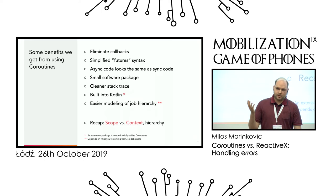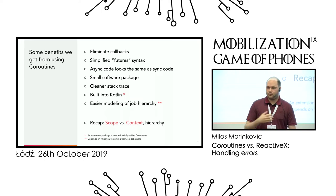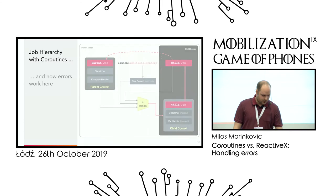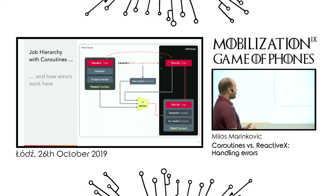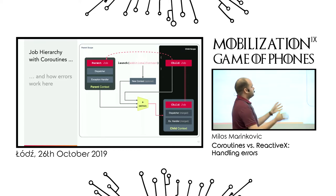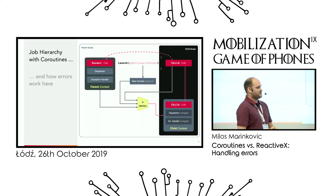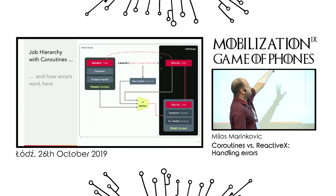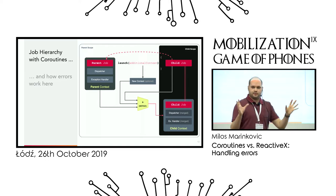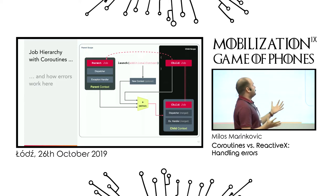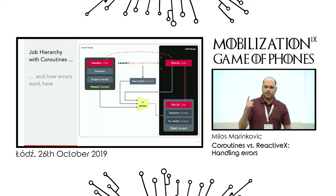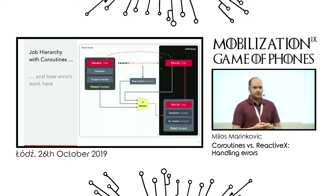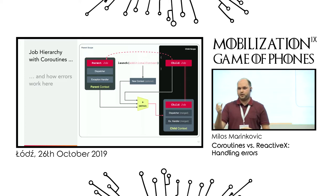For me as an Android developer, it was much easier to model job hierarchy with coroutines. So let's quickly recap scope versus context — this is very interesting because I believe it's misinterpreted a lot. Basically the white area is your parent scope or root scope or main scope, and this scope has only one element, which is the coroutine context.